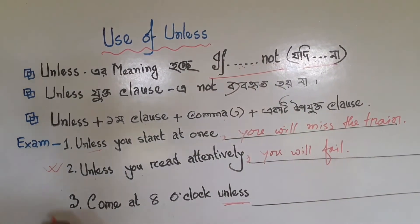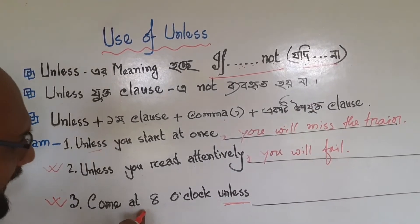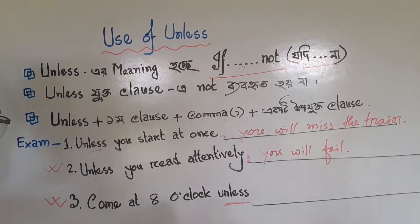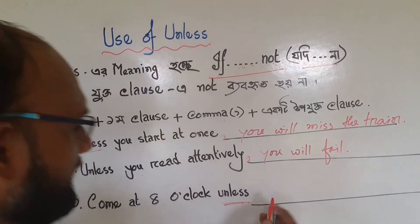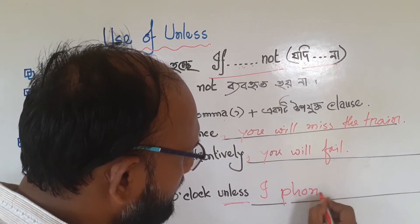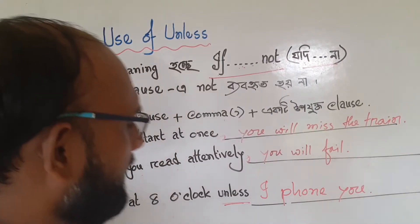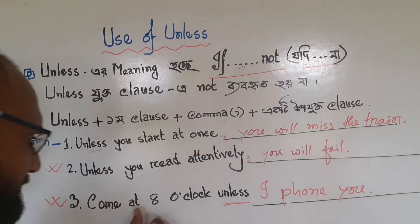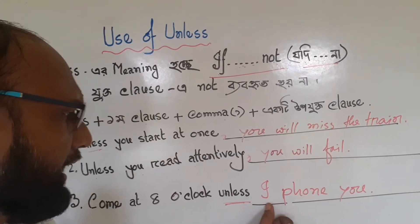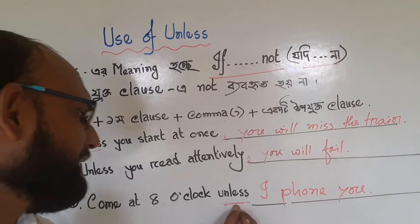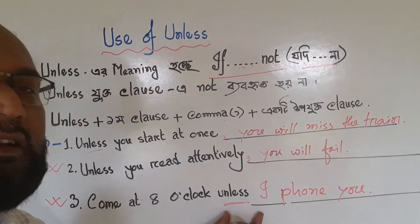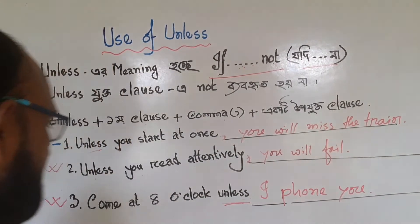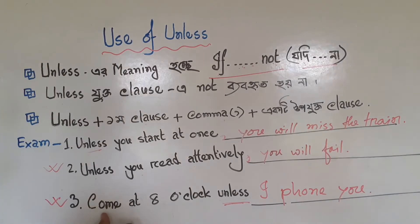Very easy. Look at this last example: 'Come at eight o'clock unless I phone you.' Here, unless has been used between the two sentences, so we did not use any comma. Come at eight o'clock unless I phone you.